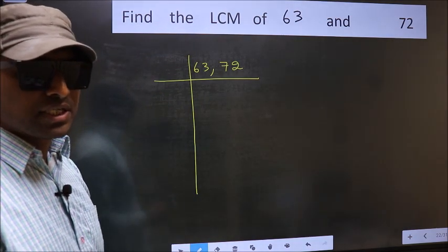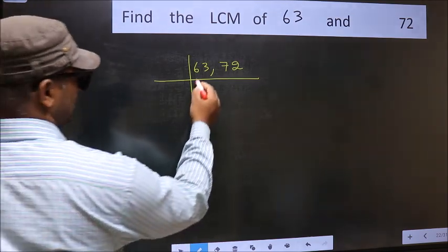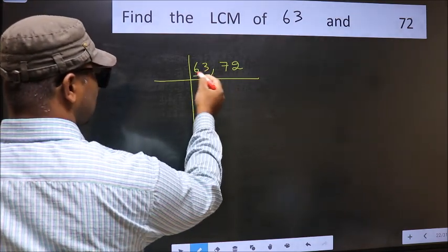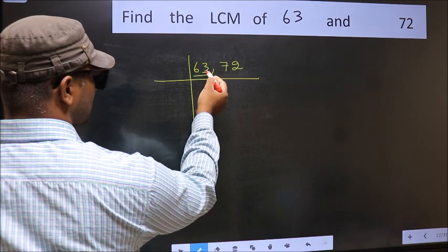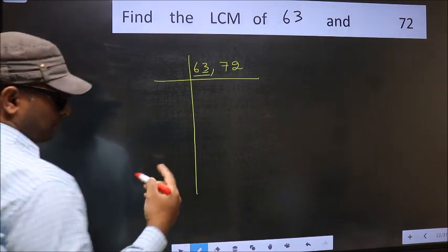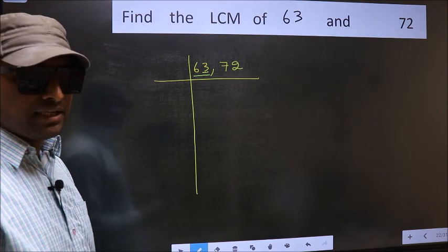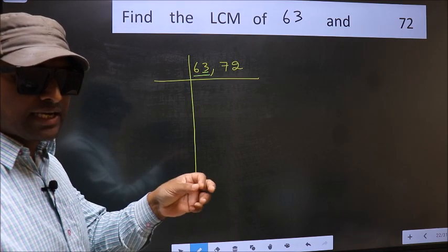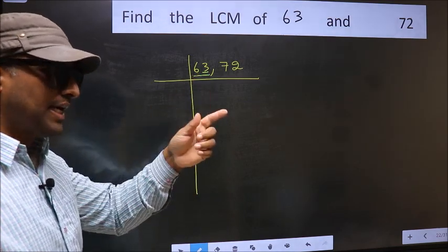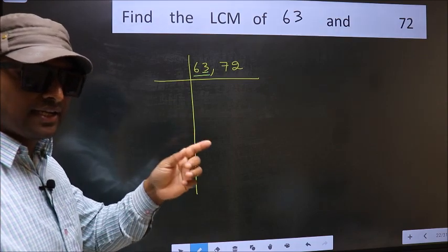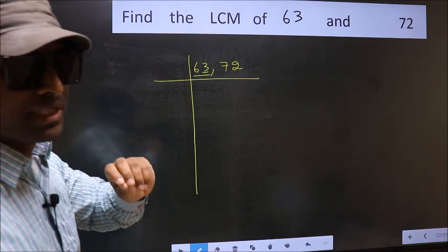Now focus on the first number, which is 63. The last digit is 3, which is not even, so this is not divisible by 2. The next prime number is 3. To check divisibility by 3, we add the digits: 6 plus 3 gives 9, and 9 is divisible by 3. So 63 is also divisible by 3.